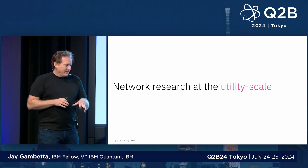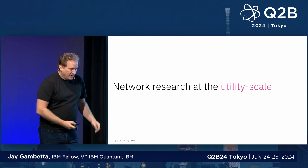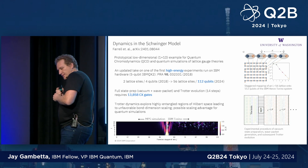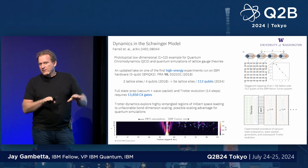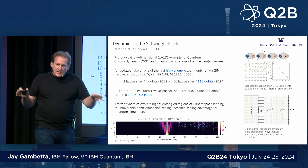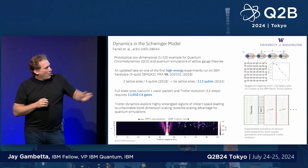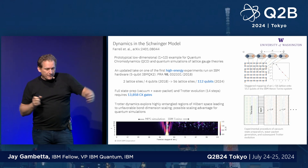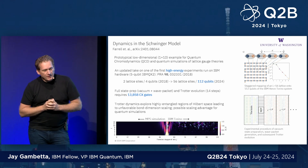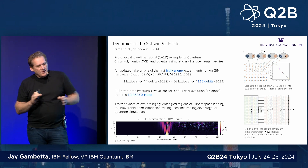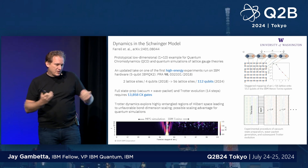I'm going to jump into a couple of examples to give you a flavor of how I think we're going to get from utility to what we call advantage. One paper recently done by the University of Washington comes up with novel ways of mapping the problem to quantum hardware, taking rigorous approximations to remove some higher-order interaction terms, so they can create a simple circuit for evolving a wave packet. They run it on over 100 qubits — about 13,000 gates — do post-processing and error mitigation, and find they can compare properties to matrix product states and find systematic differences.